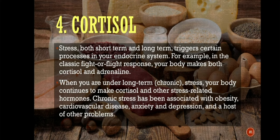Number 4: cortisol. Stress, both short-term and long-term, triggers certain processes in your endocrine system. In the classic fight-or-flight response, your body makes both cortisol and adrenaline. When you are under long-term or chronic stress, your body continues to make cortisol and other stress-related hormones. Chronic stress has been associated with obesity, cardiovascular disease, anxiety, and depression, among a host of other problems.